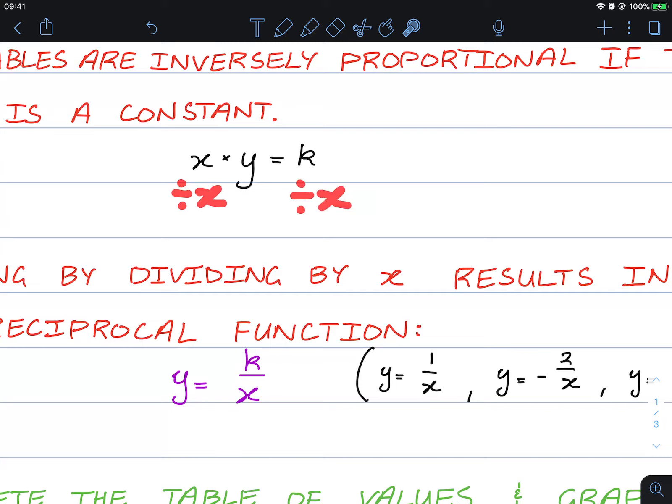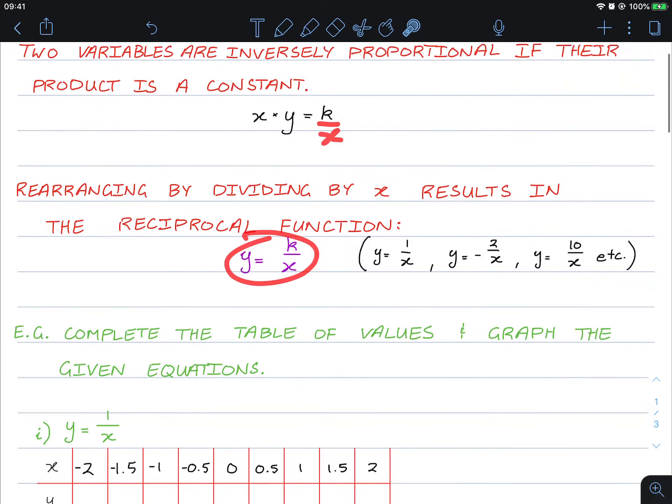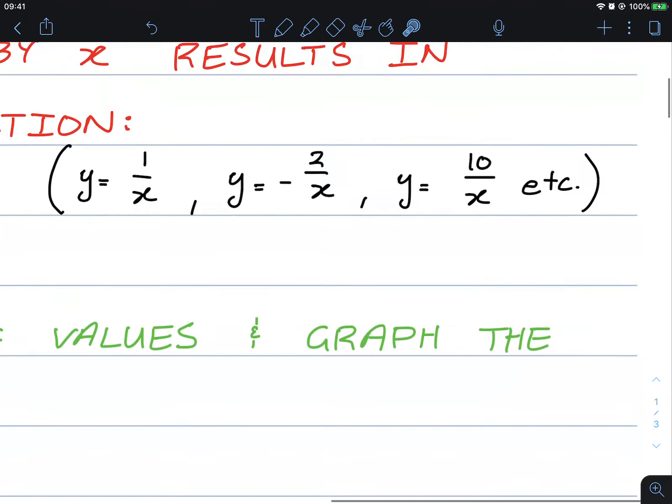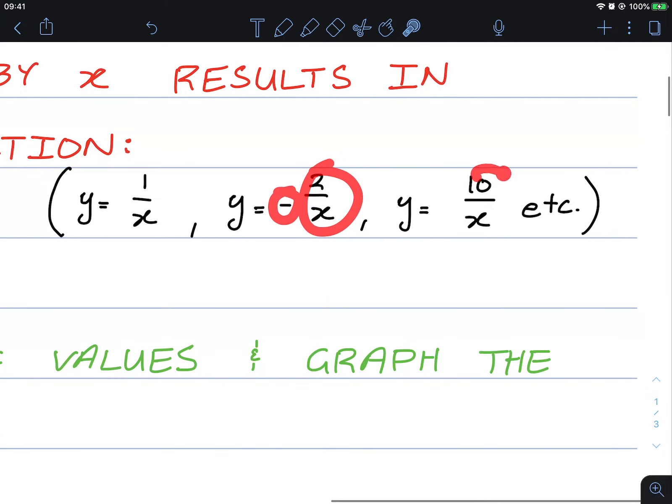These two cancel and we get k over x, which gives us the reciprocal function. Here are three examples: 1 over x, negative 2 over x, or even 10 over x.